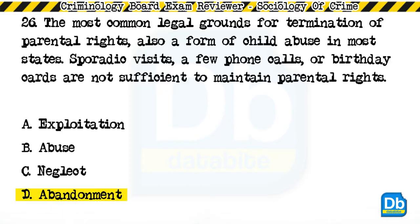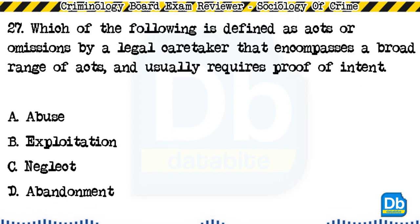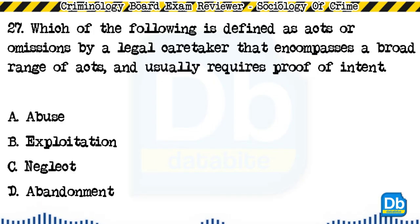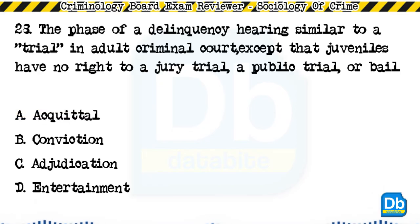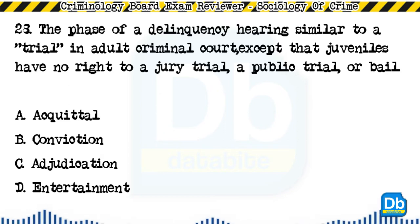The answer is D, abandonment. Question 27: Which of the following is defined as acts or omissions by a legal caretaker that encompasses a broad range of acts and usually requires proof of intent? a) abuse, b) exploitation, c) neglect, d) abandonment. The answer is A, abuse. Question 28: The phase of a delinquency hearing similar to a trial in adult criminal court, except that juveniles have no right to a jury trial, public trial, or bail: a) acquittal, b) conviction, c) adjudication, d) entertainment.